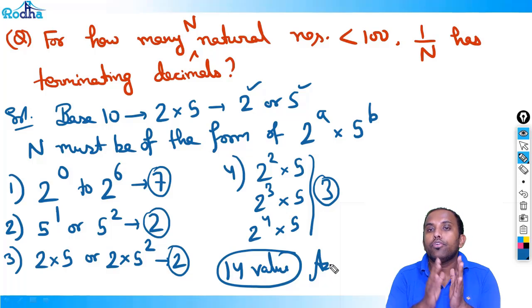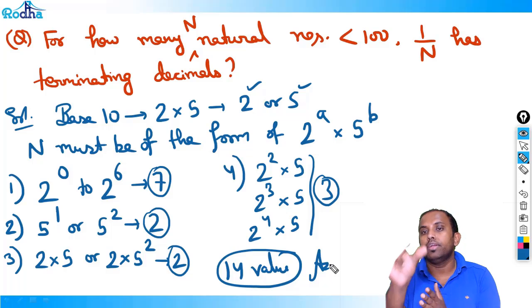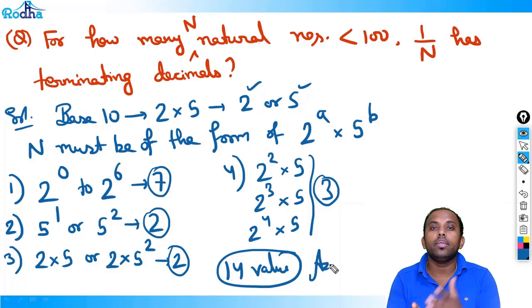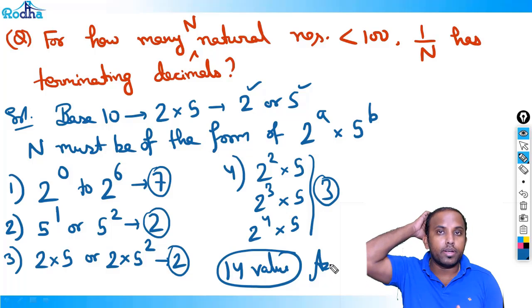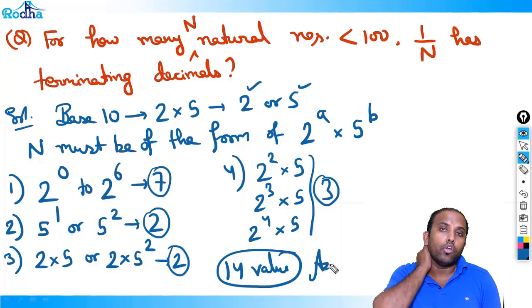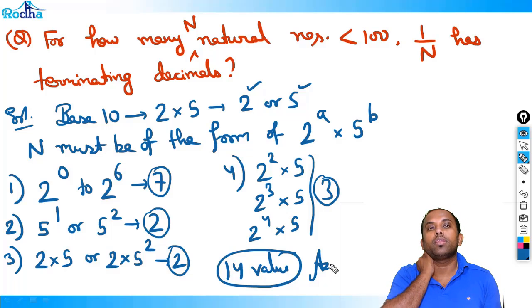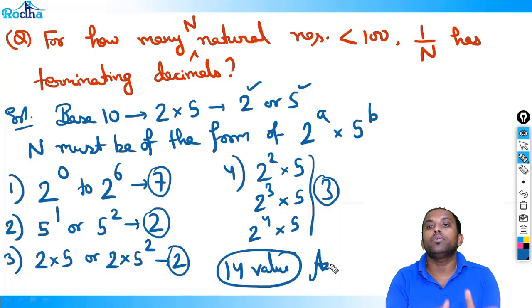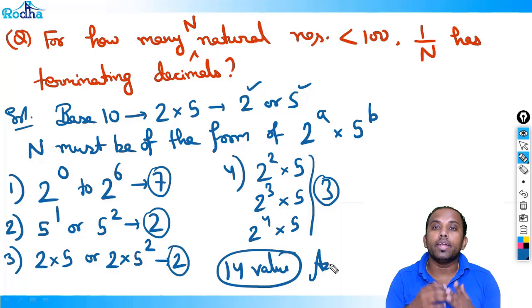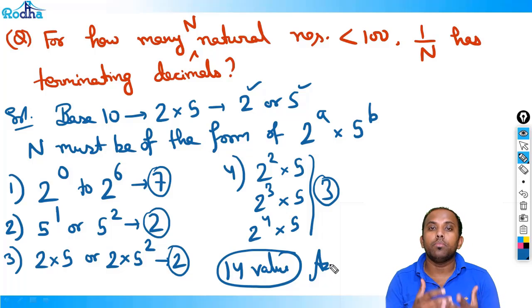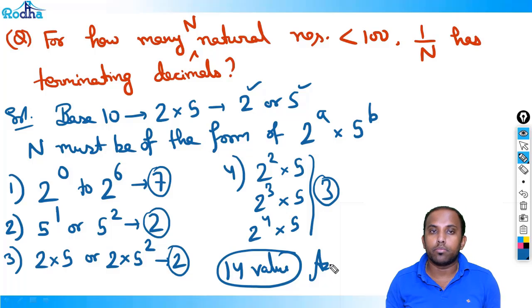This means: if the denominator k contains only the primes which are included in the base — like in base 10, primes are 2 and 5 — those numbers will have terminating decimals. Otherwise they will have non-terminating decimals.